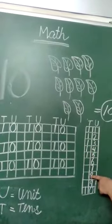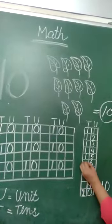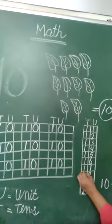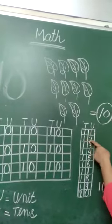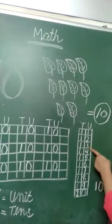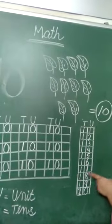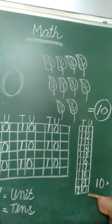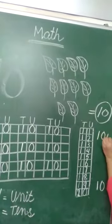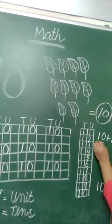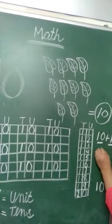जैसे हमने यहाँ पर 1 लिख दिया, यहाँ पर last में 2 आ जाएगा, तो यह क्या बन गया? Unit 10s. 11, 12, 13, 14, 15, 16, 17, 18, 19. कैसे करेंगे हम? 10 plus 1 — तो यह 10 का ग्रुप और यह सिंगल लिखेंगे.